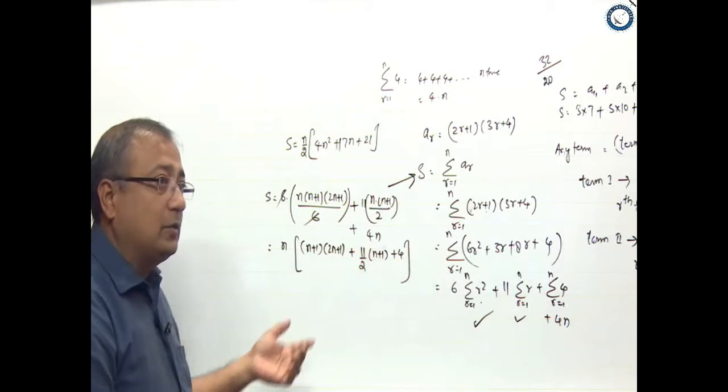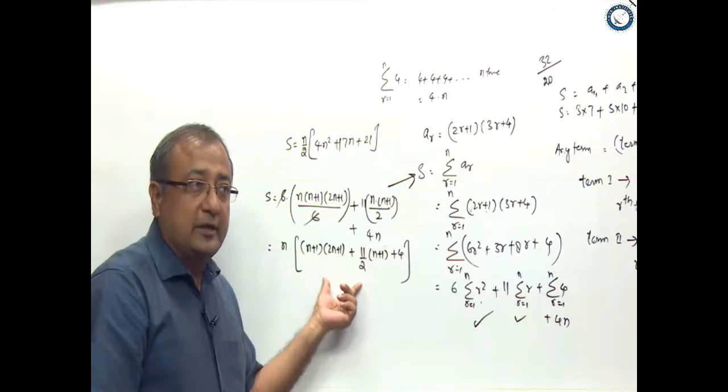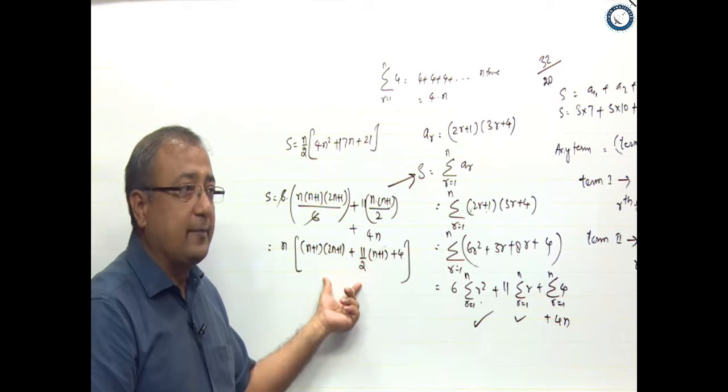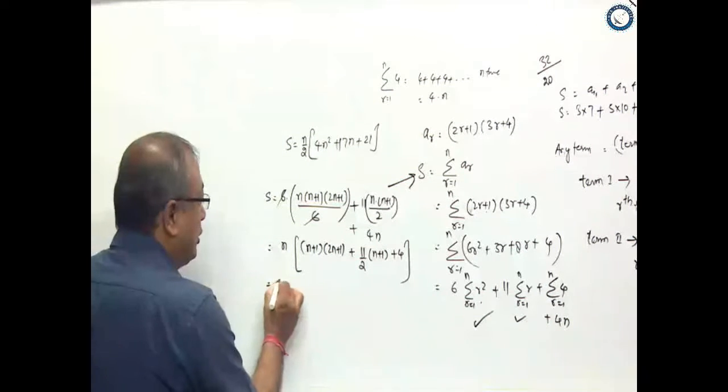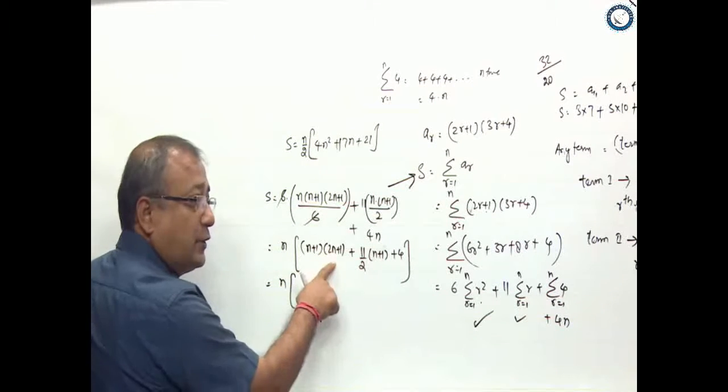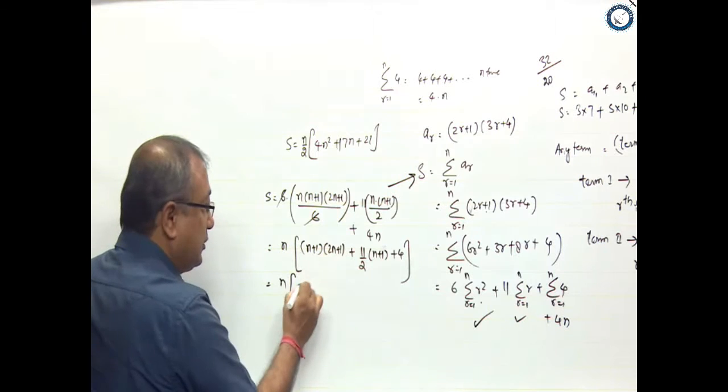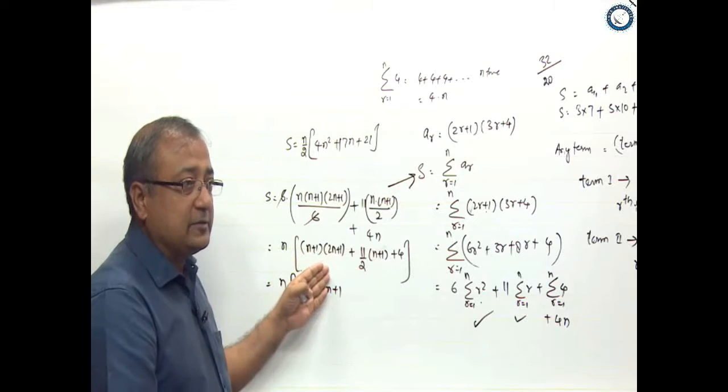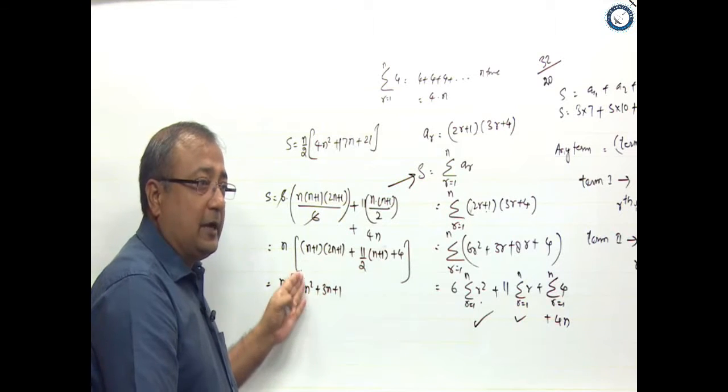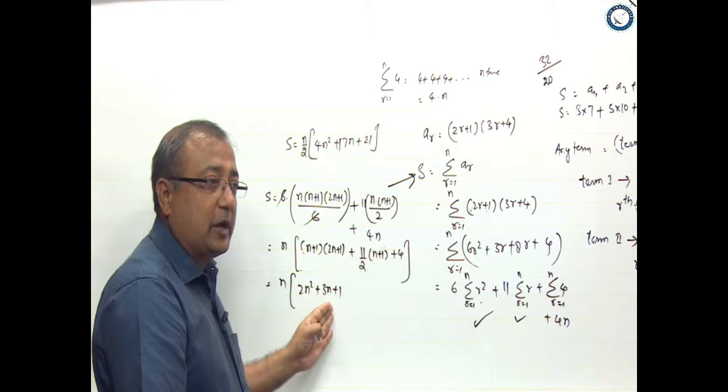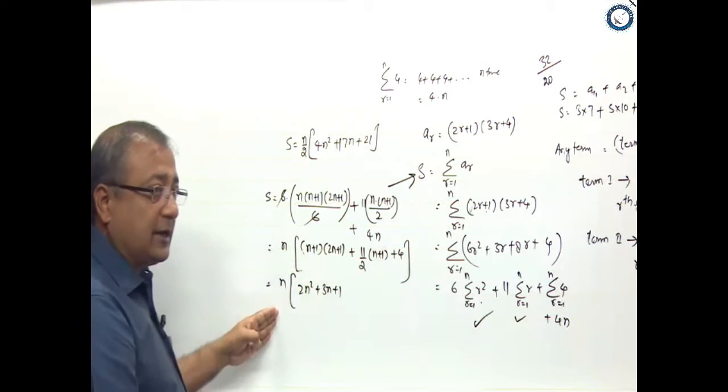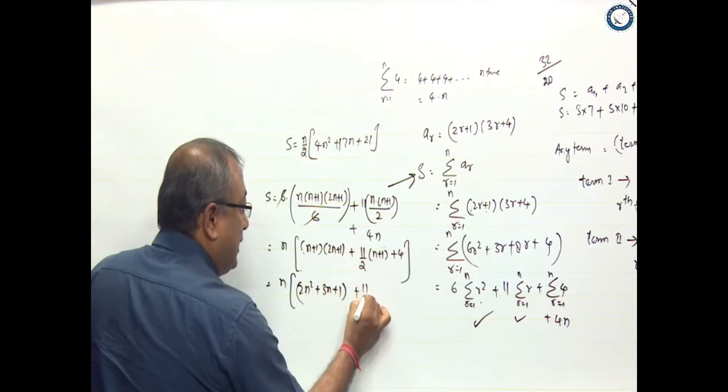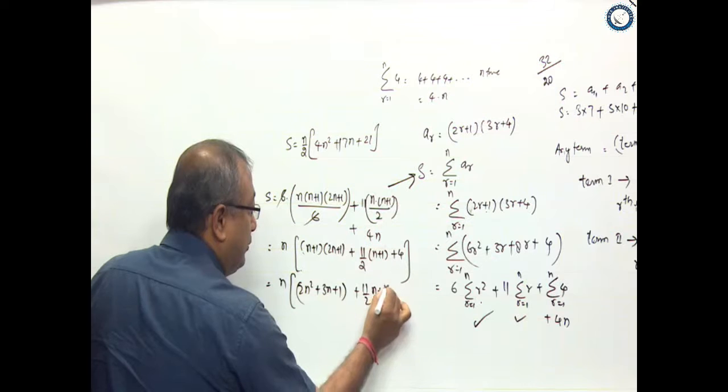So (n+1)(2n+1) will be equal to 2n² + 3n + 1. Here we have to do more of this. What do we have to do? What is the value of 2n + 1?